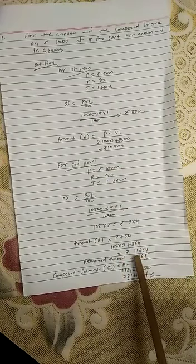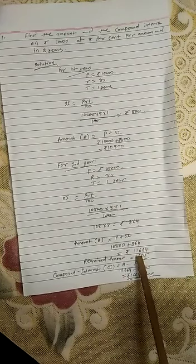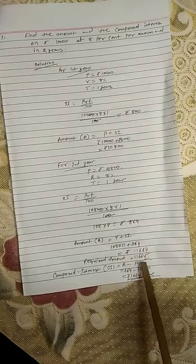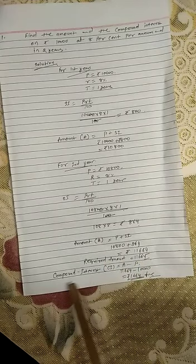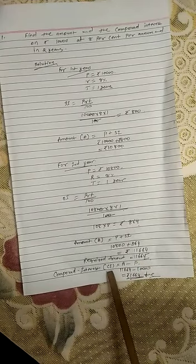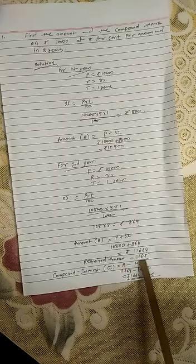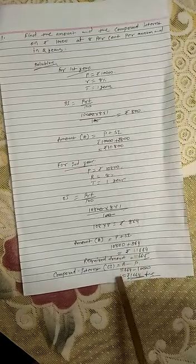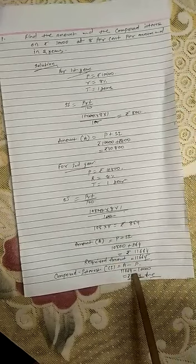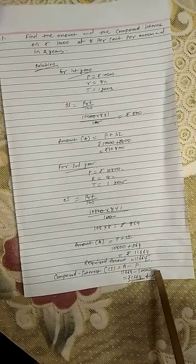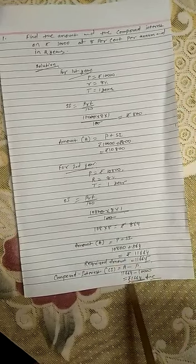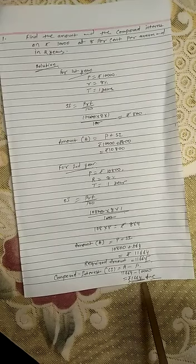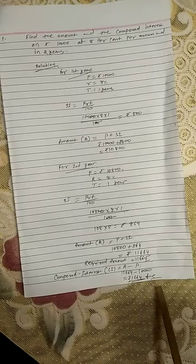The amount for the second year is Rs 11,664, which is the required final amount. Compound interest equals the amount for the last year minus the principal for the first year: 11,664 − 10,000 = Rs 1,664. This is the compound interest.